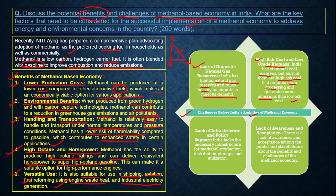The third challenge is lack of infrastructure and policy. The necessary infrastructure for methanol production, distribution, storage, and utilization is lacking. There is also a lack of awareness and acceptance among the public and stakeholders about the benefits and challenges of the methanol economy.